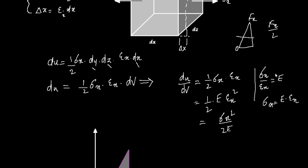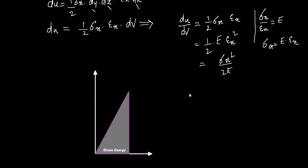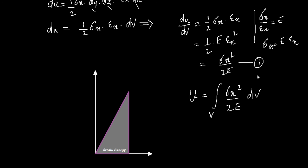Alternatively, since epsilon x equals sigma x / E, we can rewrite the internal energy per unit volume as sigma x squared over 2E. So the total internal energy is: u = integral over volume of (sigma x squared / 2E) dV. Both forms of the equation are convenient in applications.